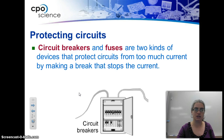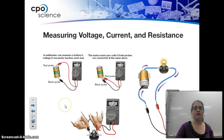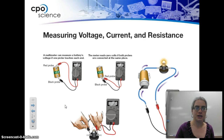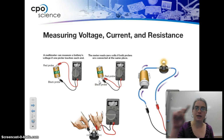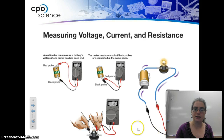We have diagrams showing how to measure voltage, current, and resistance. Put the probes to the sides so the current rolls through. This won't work if you don't have a complete circuit — you need a complete circuit in order for it to happen. A complete circuit here will help you measure what you need to measure.